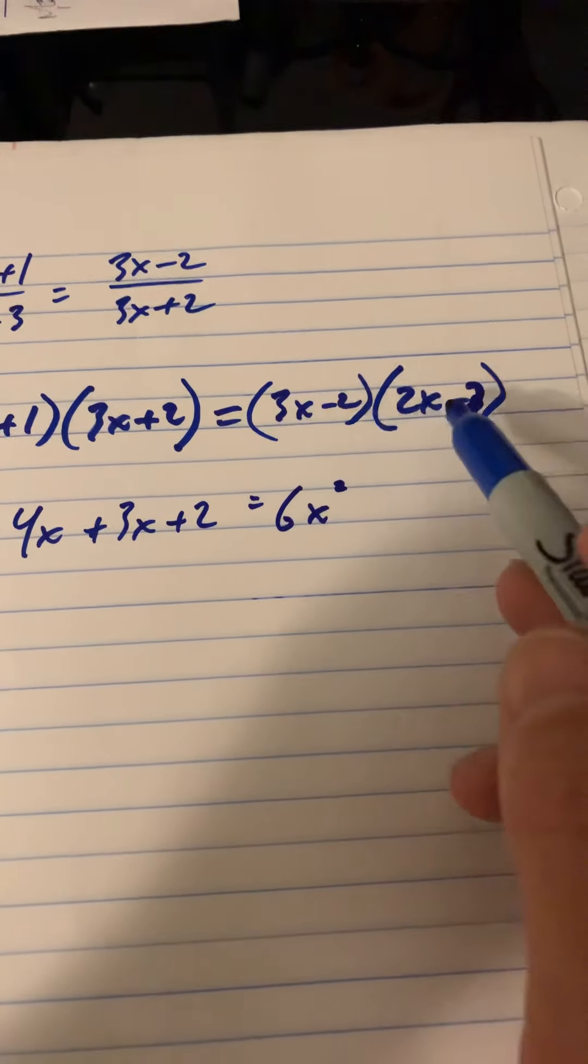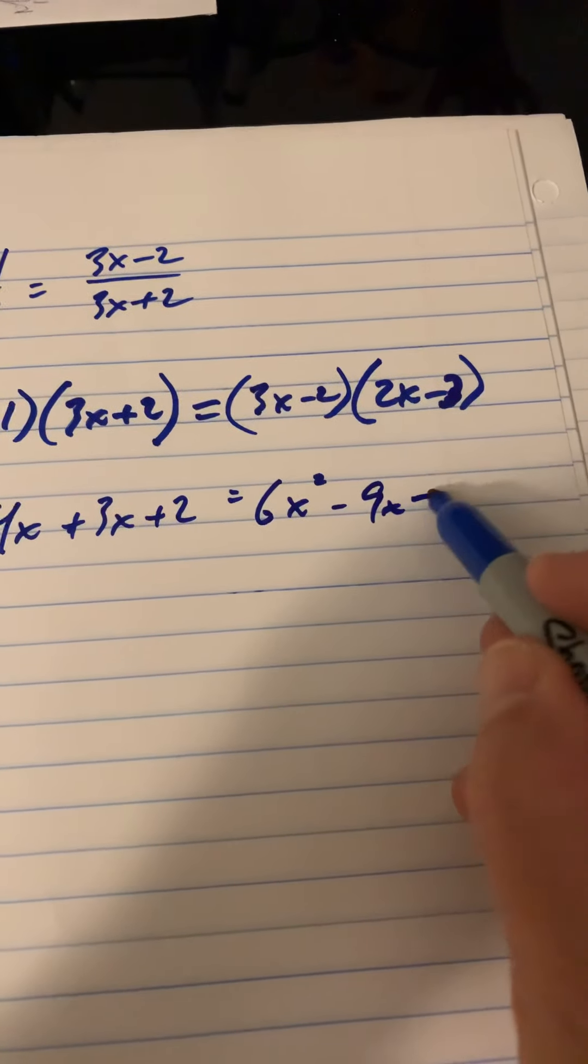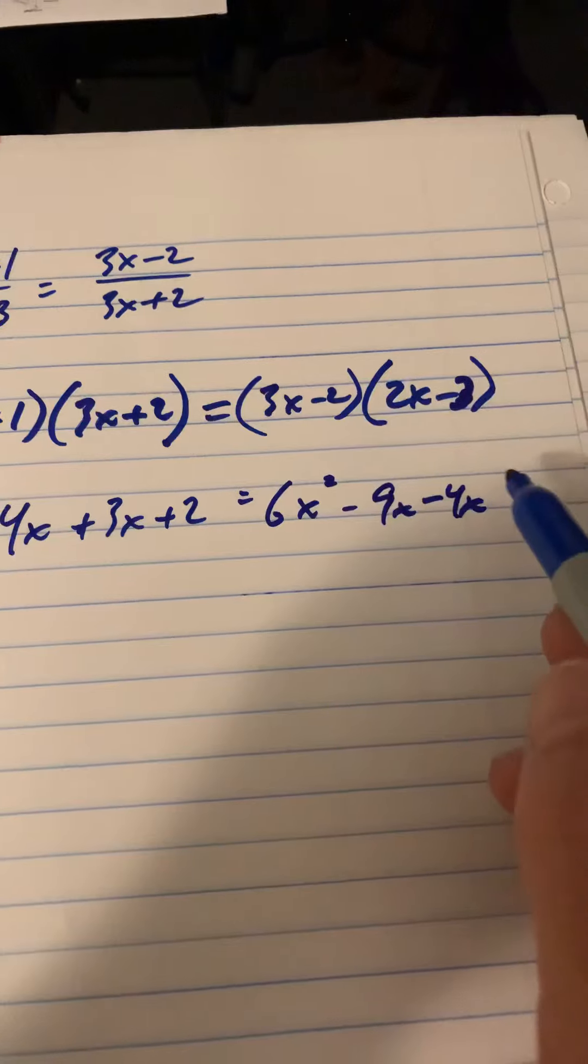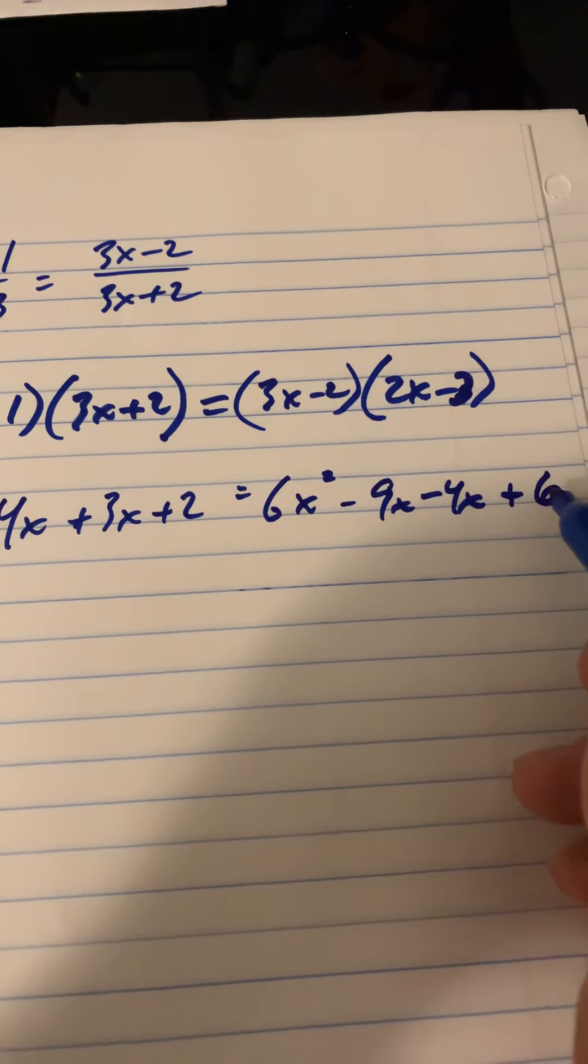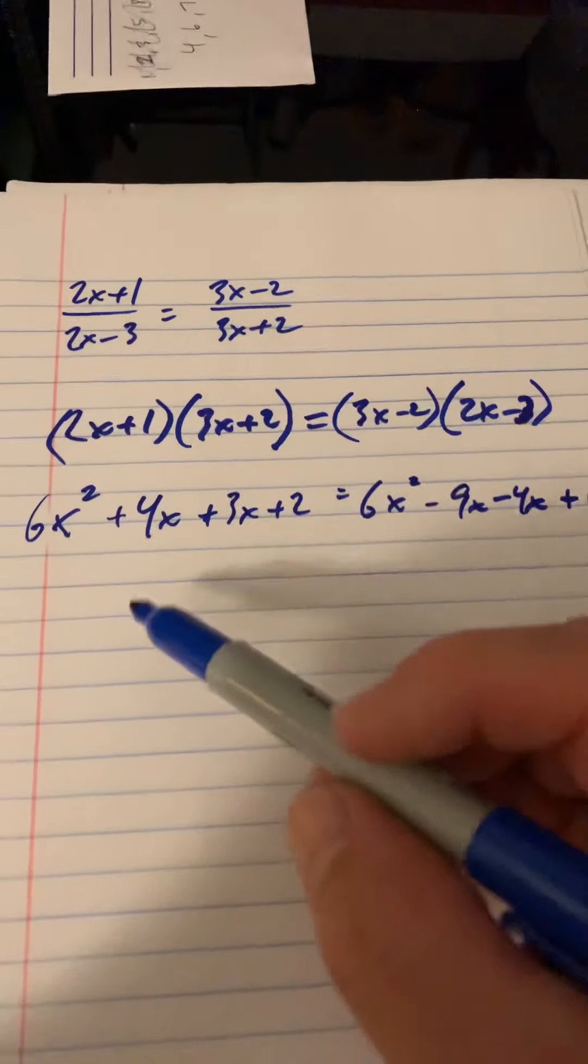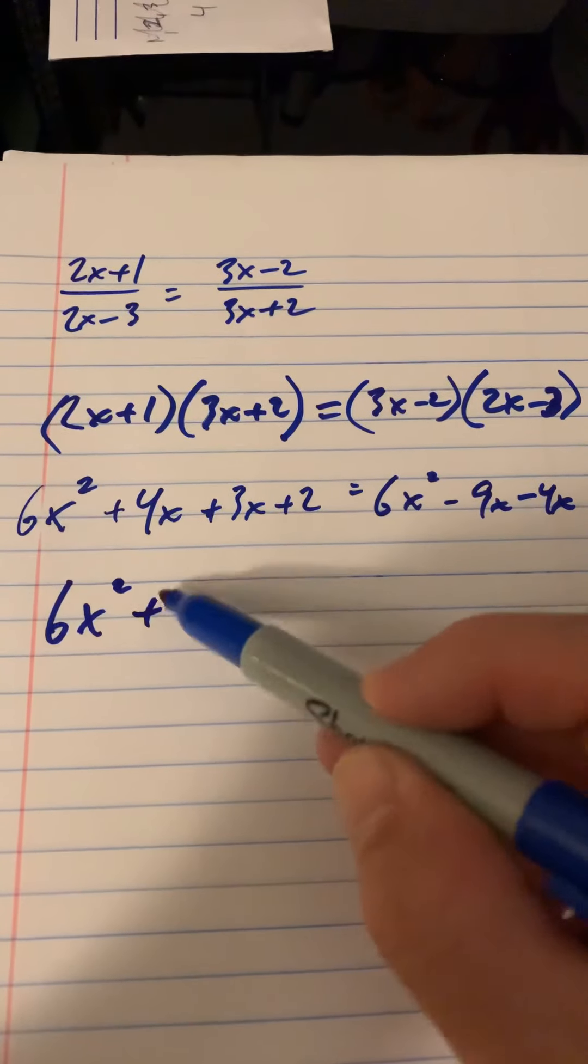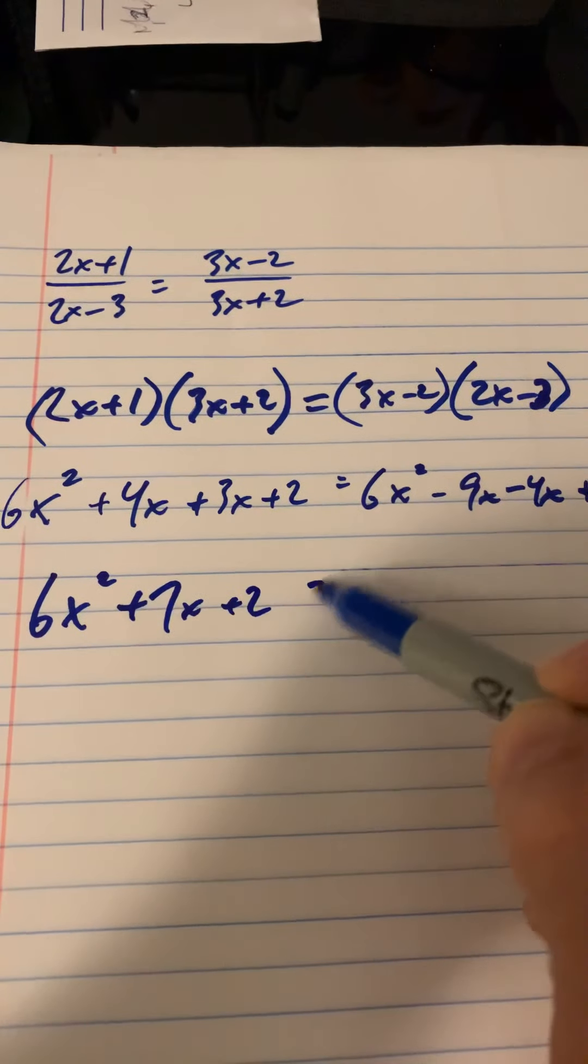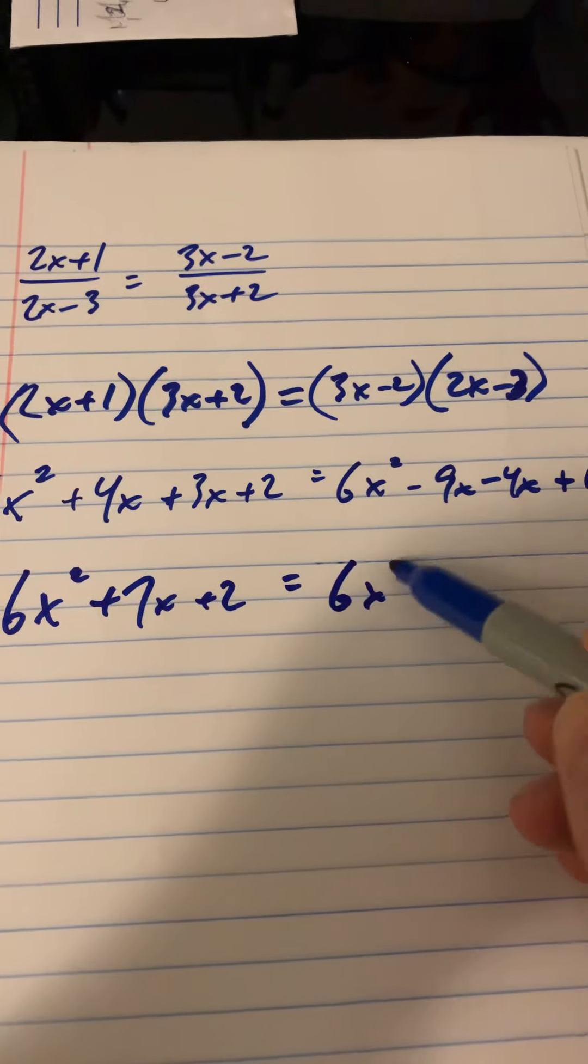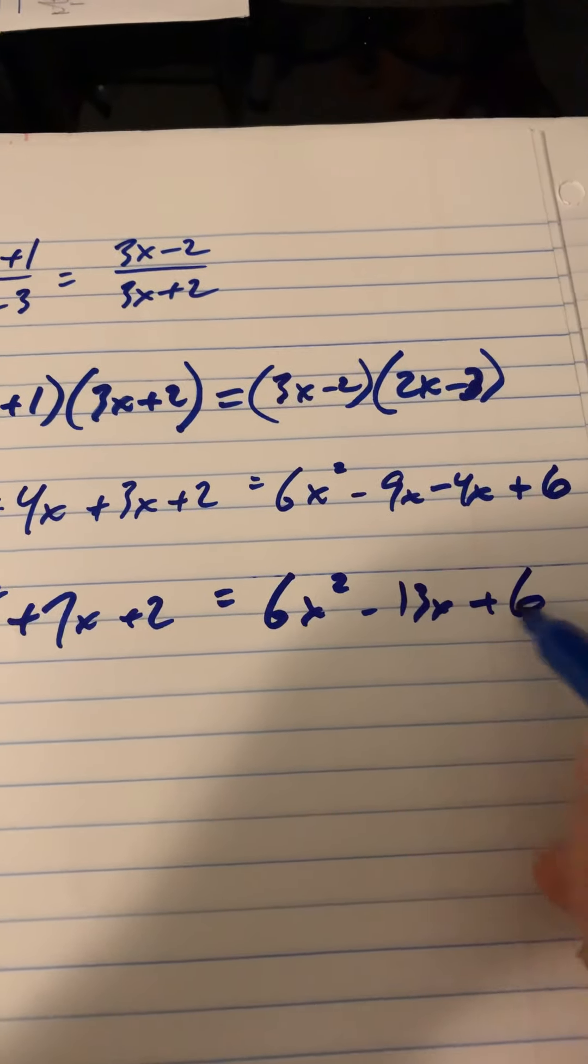And then minus 9x minus 4x and positive 6. Alright, combine like terms. 6x squared plus 7x plus 2 equals 6x squared minus 13x plus 6.